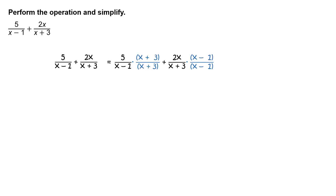To rewrite the fractions so as to give them a common denominator, multiply the first fraction by the quantity x plus 3 divided by the quantity x plus 3, and the second fraction by the quantity x minus 1 divided by the quantity x minus 1.